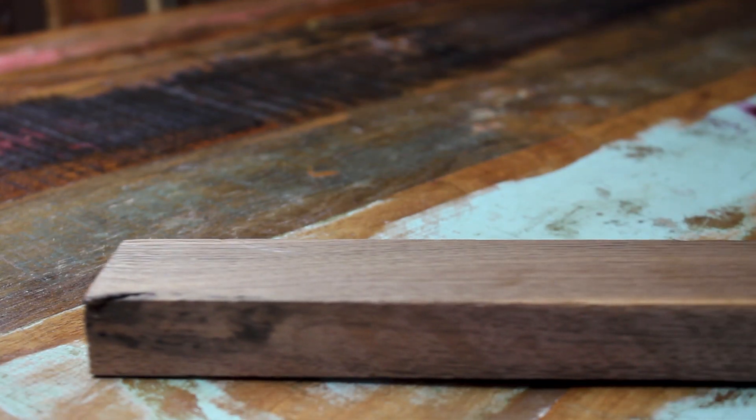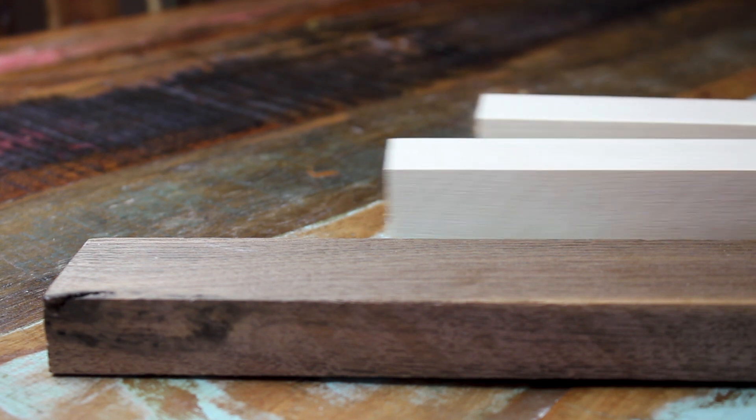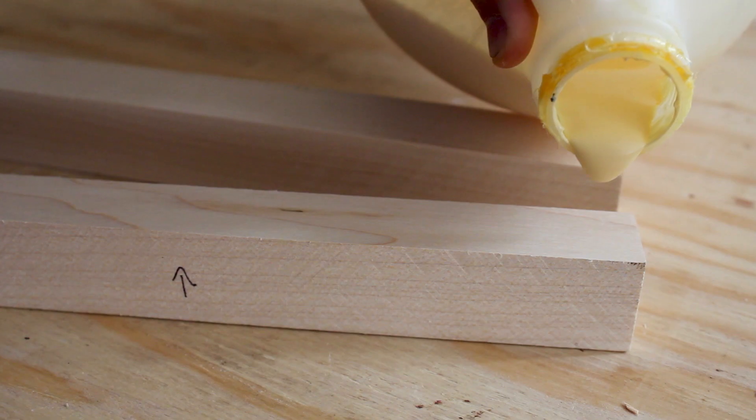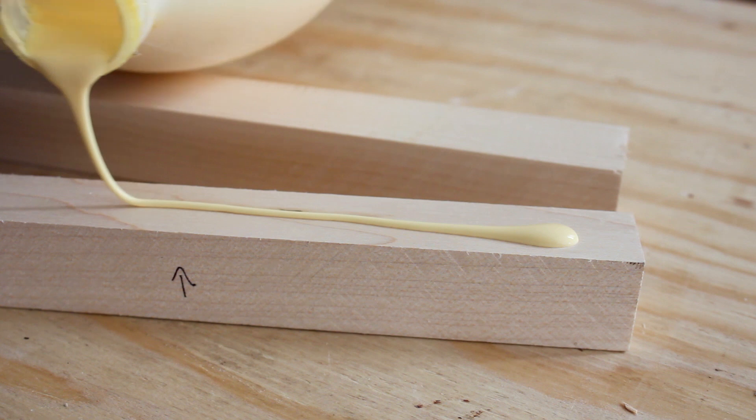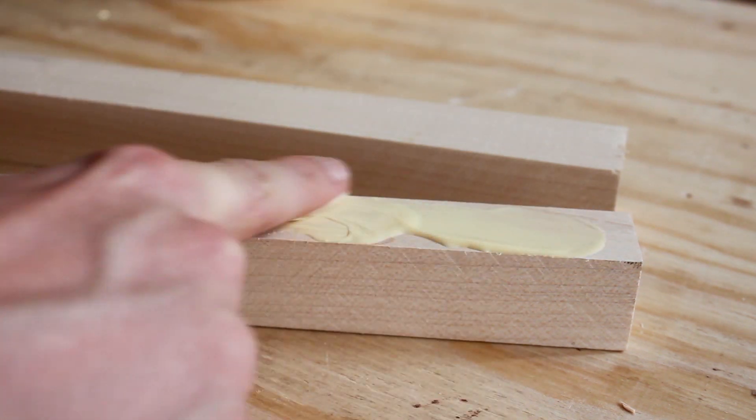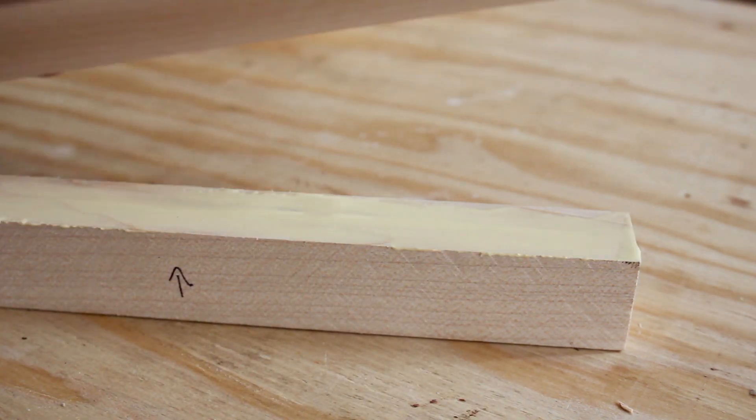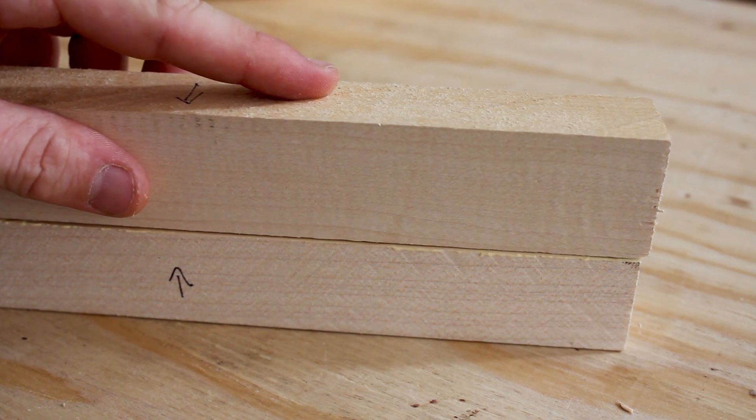Next I started my build using scrap walnut I have laying around as well as a few strips of maple. Now I didn't have maple that matched the width of the walnut, so I started off by laminating two strips together before moving on to the next step.